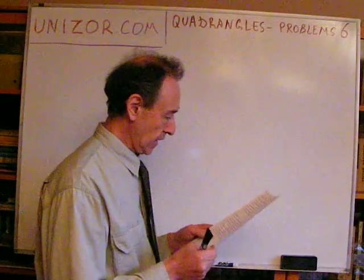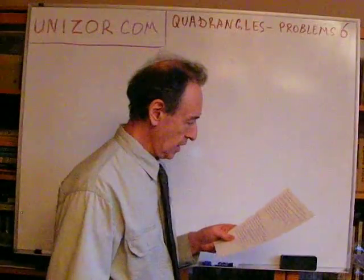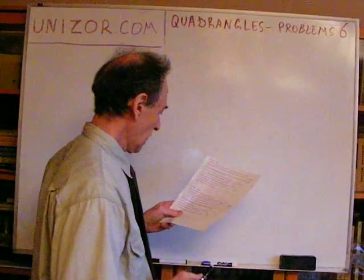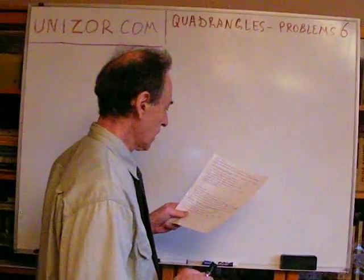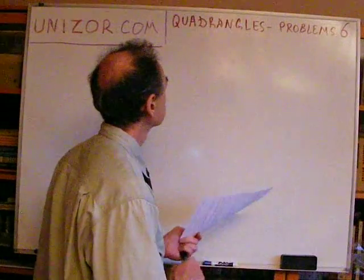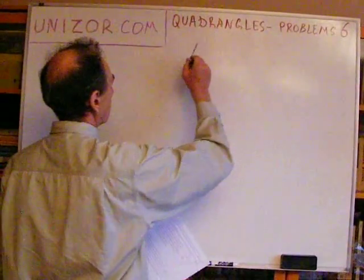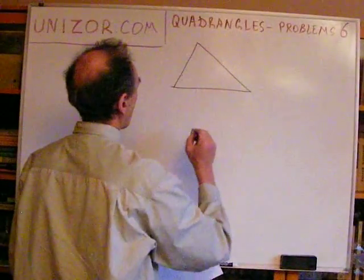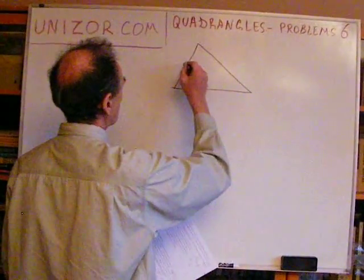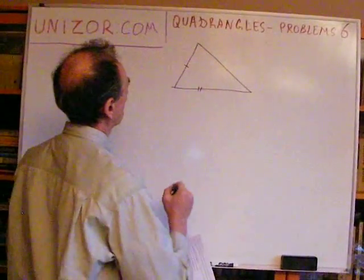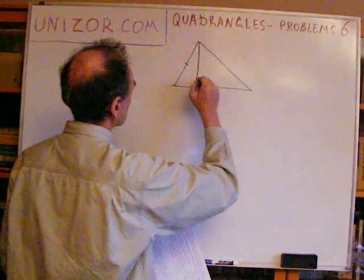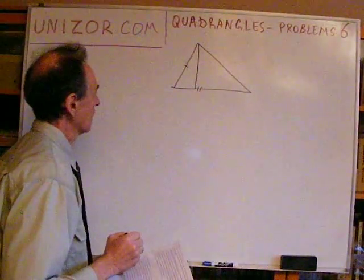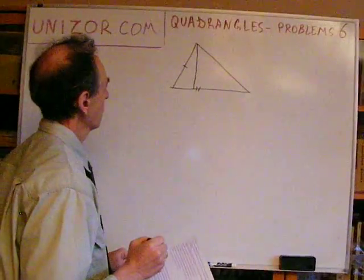Okay, so let me just start. Construct a triangle by two sides and an altitude onto one of them. So we have a triangle, we have two sides and an altitude towards one of these sides.